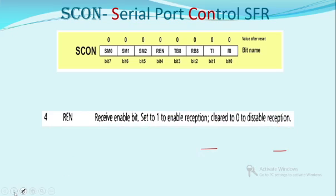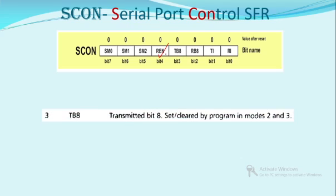The REN bit is the receive enable bit — from the name itself it is clear it will enable reception when set to 1. When REN is 0, reception is disabled. Next is TB8 — transmit bit 8. In mode 2 and mode 3, nine bits are transmitted. Since the SBUF register is only 8 bits wide, the additional ninth bit is stored in TB8 within SCON.